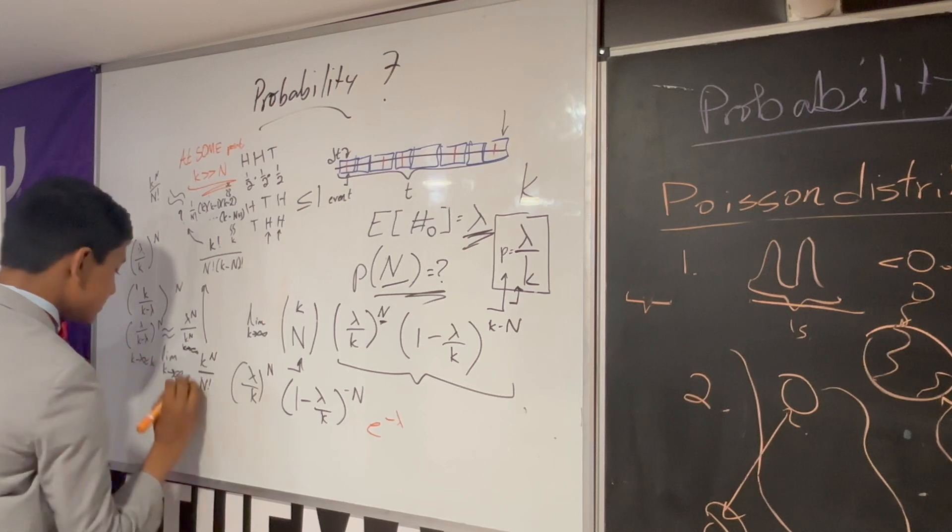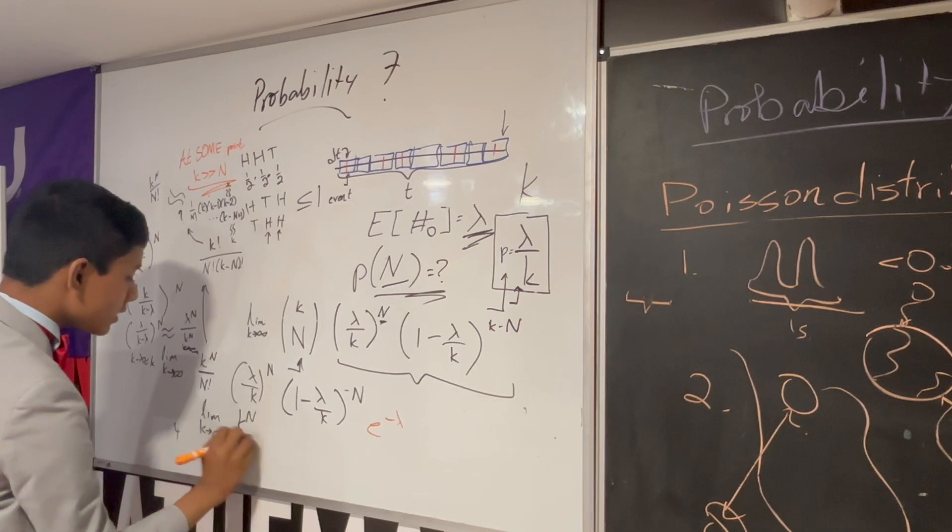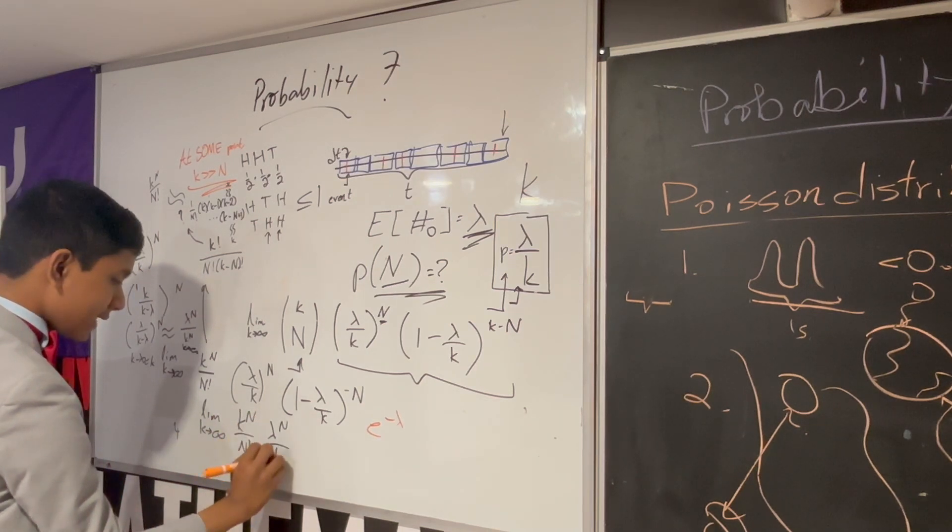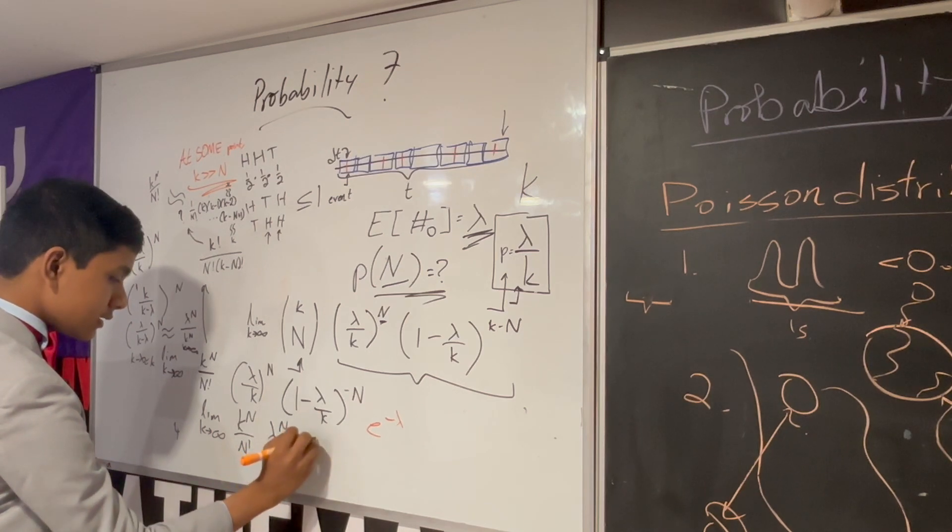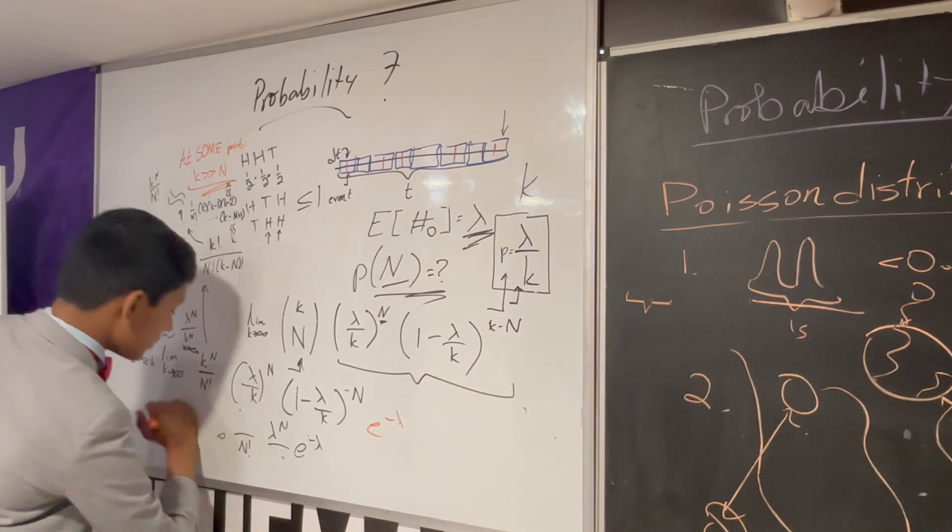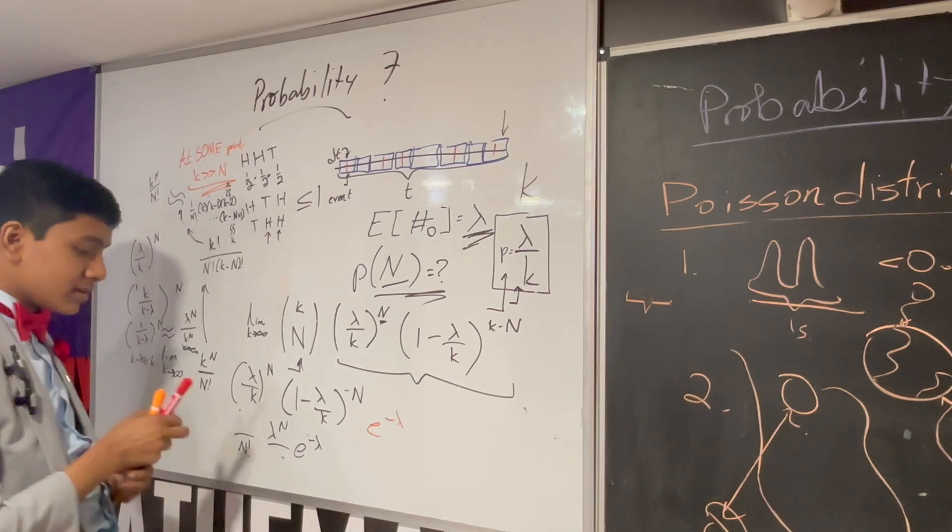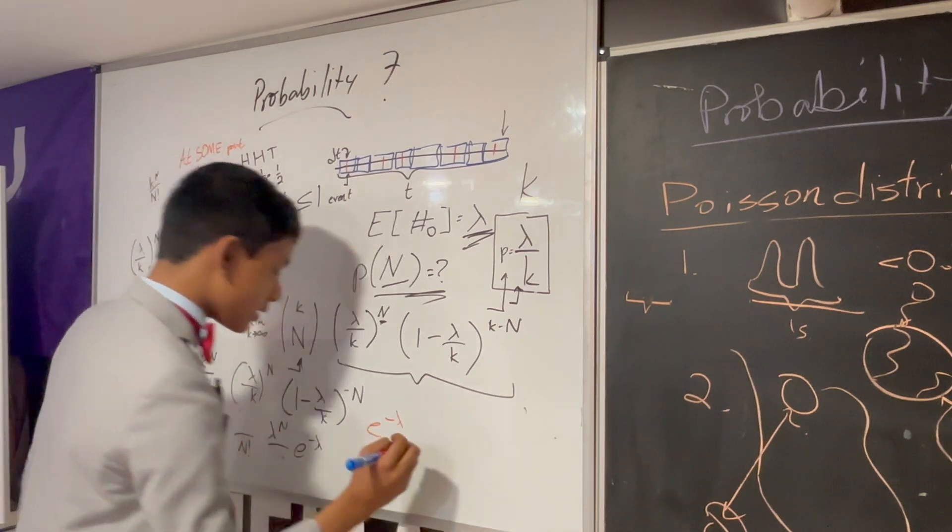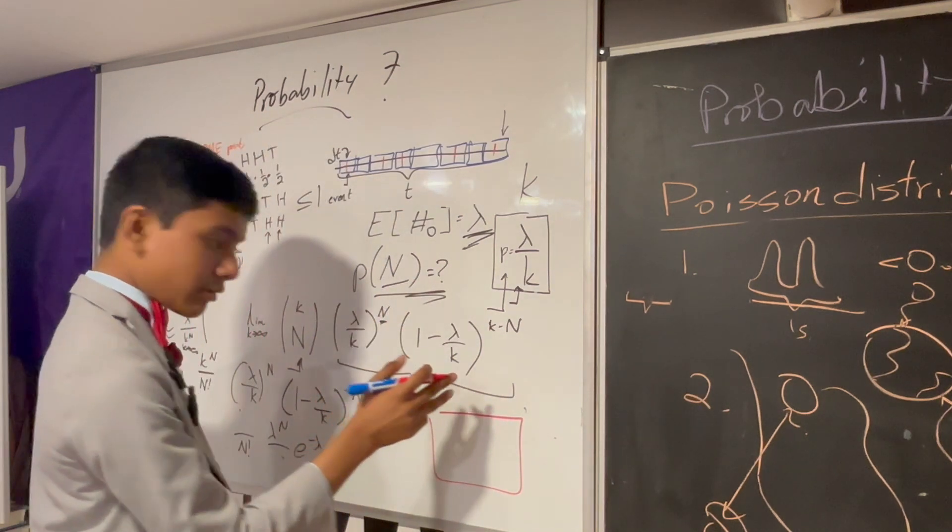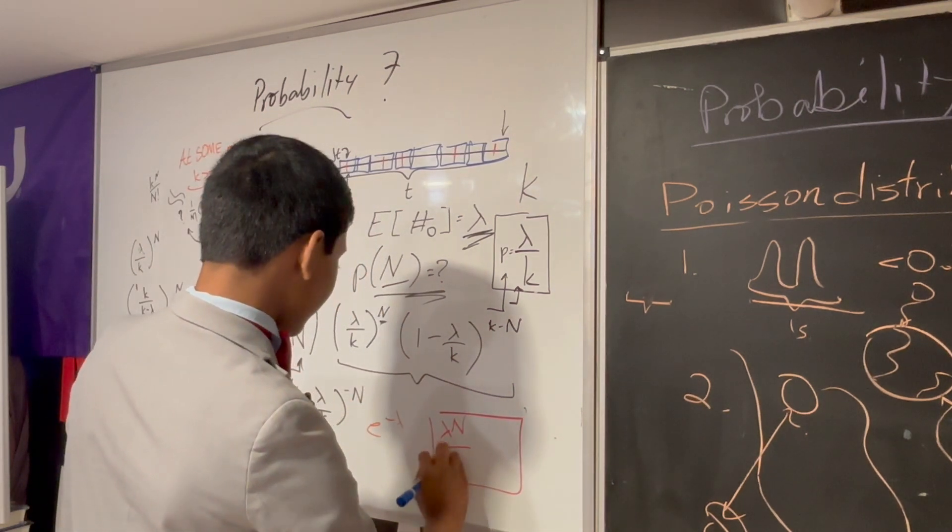Which means you get the limit as k approaches infinity of k to the n, n factorial, lambda to the n, k to the n, e to the minus lambda. These two cancel out, and k is gone. We've evaluated the limit completely. So, the Poisson distribution is lambda to the n over n factorial, e to the minus lambda.